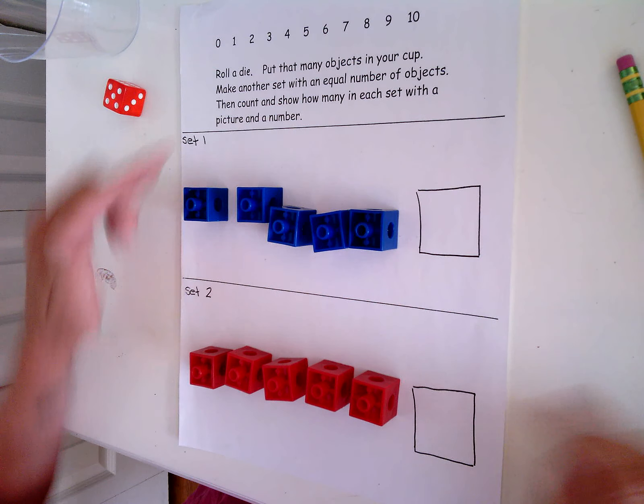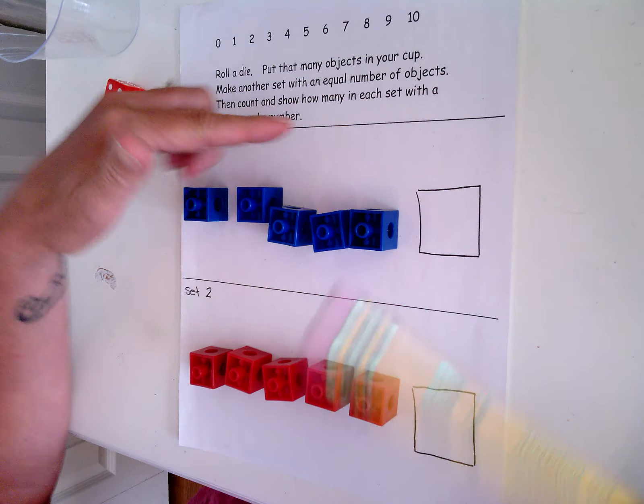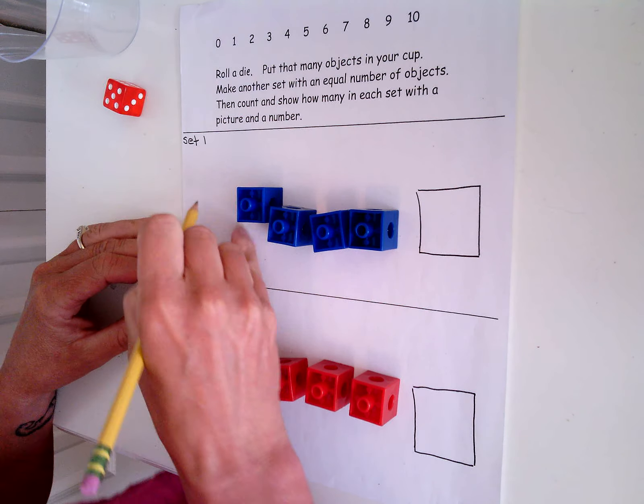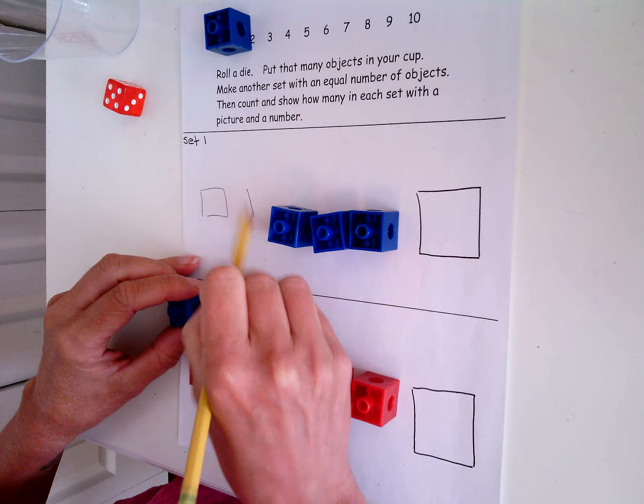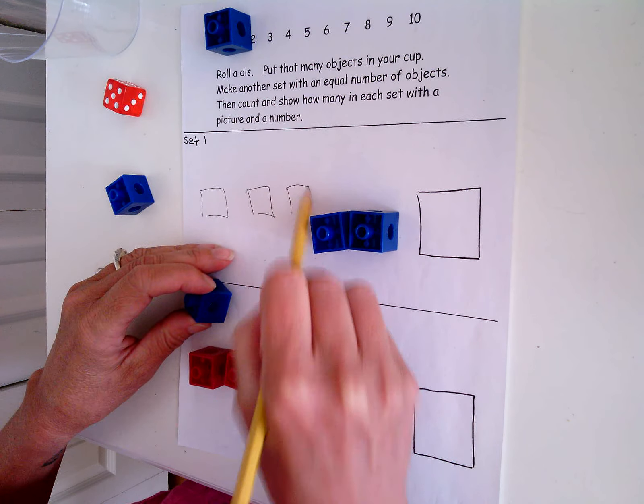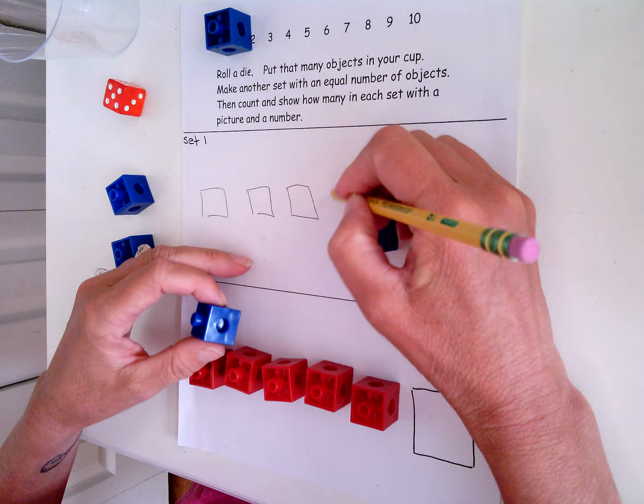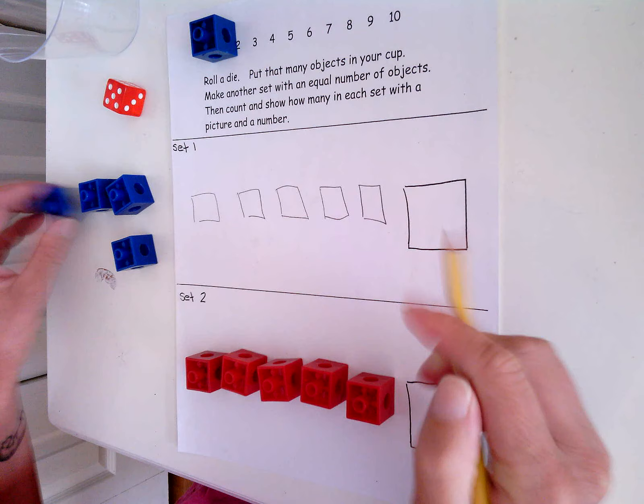So then count and show how many in each set with a picture and a number. So I'm going to draw here, one, two, three, four, five, and I'll write the number five here. It is up here if I forget what it looks like: a hat, a neck, and a nice round tummy.